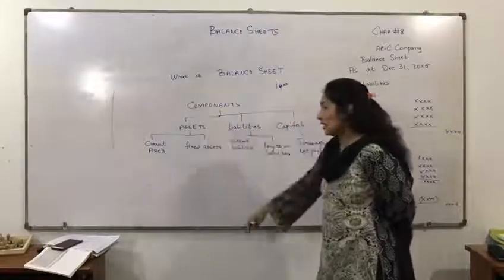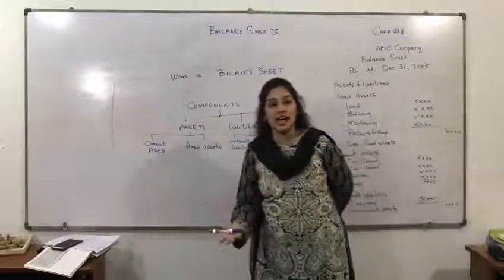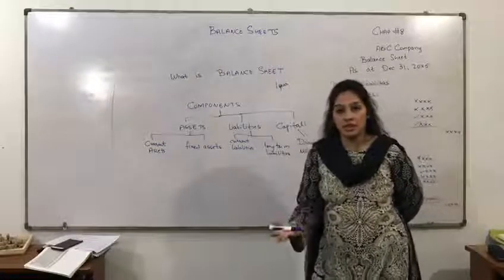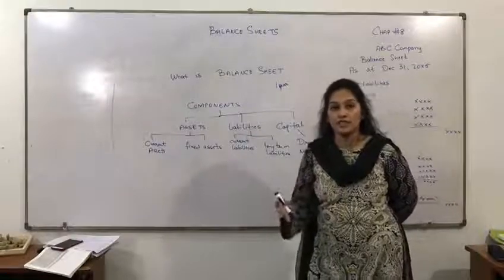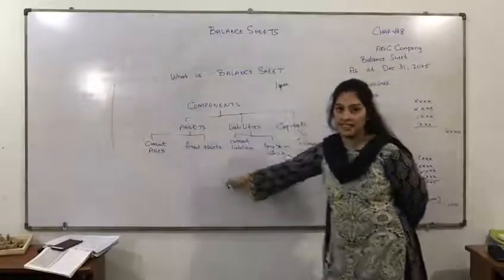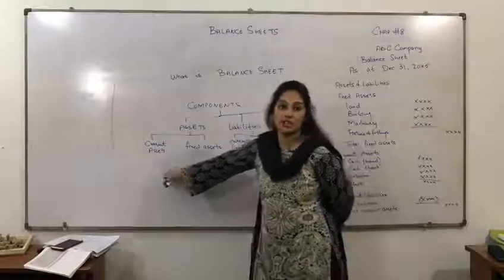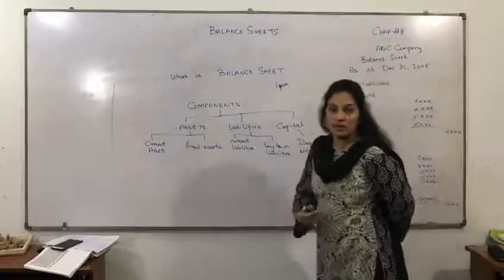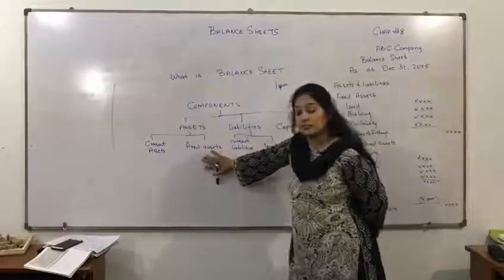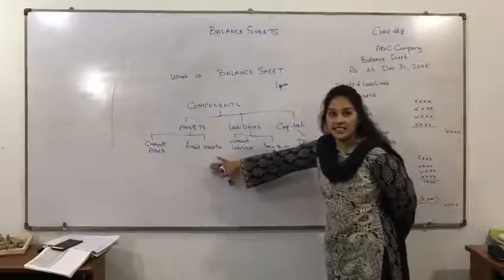Talking about assets — we have studied in chapter number one that assets are basically defined as the owner's cash amount, cash on hand, equipment, any kind of long term assets, any kind of long term cash. Assets are further categorized into two parts: current assets and fixed assets. Current assets are those used within one year. Fixed assets are those for the long term — more than five or ten years. Examples of fixed assets are buildings, land, machinery, fixtures and fittings.